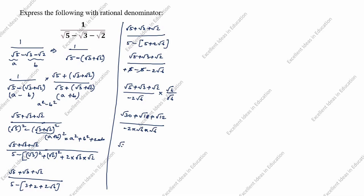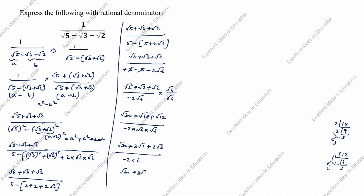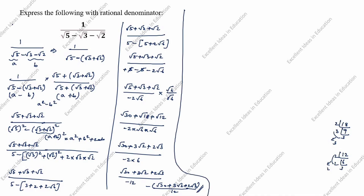Next, root 18 — we take LCM: 18 = 9 × 2, so root 18 = 3 root 2. Root 12 — LCM: 12 = 4 × 3, so root 12 = 2 root 3. Denominator: minus 2 times 6 equals minus 12. So we get root 30 plus 3 root 2 plus 2 root 3, divided by minus 12, which equals minus (root 30 plus 3 root 2 plus 2 root 3) divided by 12. This is the answer by the first method.